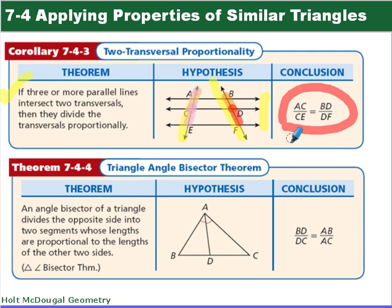The next one, the triangle angle bisector theorem. It's a lot of angles. An angle bisector of a triangle divides the opposite side into two segments whose lengths are proportional to the other two sides. So here we have an angle bisector. AD is our bisector. And it's marked with these angles here being congruent. And so it tells us that BD, this segment here, is to DC as AB is to AC. That's our conclusion for the triangle angle bisector theorem.